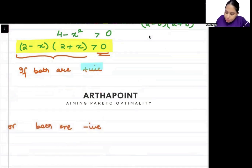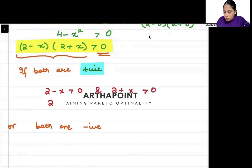Let's see when both are positive. Both are positive means (2 minus x) greater than 0 and (2 plus x) greater than 0. So 2 greater than x, and if we take 2 to the other side, x greater than minus 2.